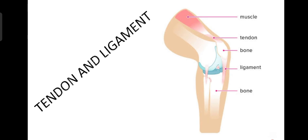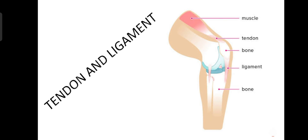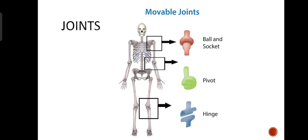Bone ko bone se kon connect karte hai? It's ligament. Or bone ko muscle se kon connect karte hai? It's tendon. A joint is a place where two bones meet or connect.